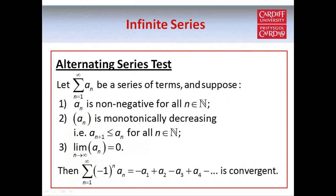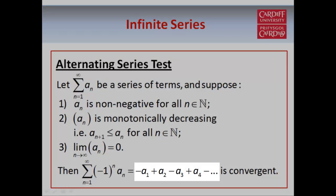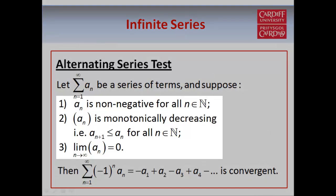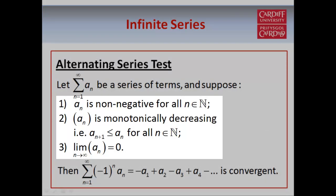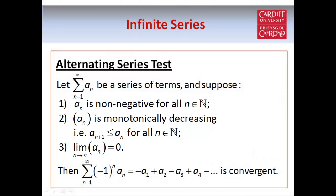Now we're going to look at one more test called the alternating series test, and it works in a very particular type of situation. The trick is to notice when you've got something in the form of an alternating series, which generally means it can be written in the form (-1)^n times something else, which we call a_n, meaning the series goes -a₁ + a₂ - a₃ + a₄ and so on. It also works whether you have (-1)^n or (-1)^(n+1). In this test, we have to check three conditions: first, a_n has to be non-negative for all n; secondly, a_n has to be monotonically decreasing; and thirdly, a_n must tend to 0 as n tends to infinity. If all three conditions hold, then we can say that the series (-1)^n · a_n is convergent.